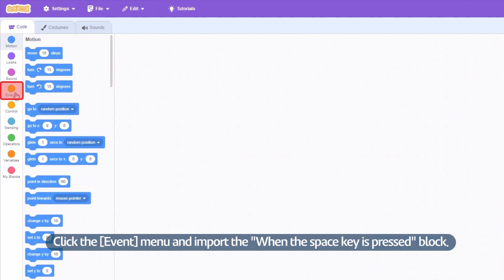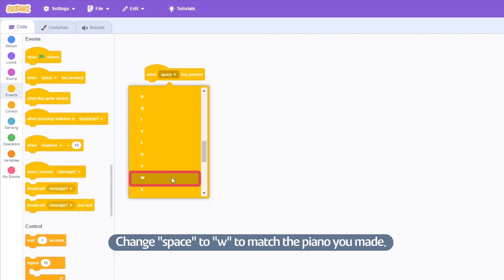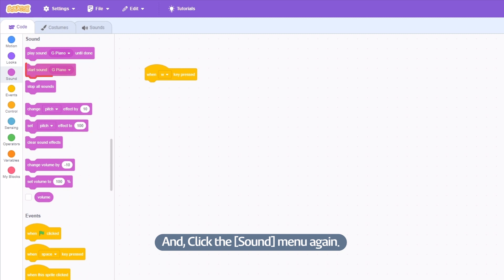Click the Event menu and import the 'when the Space key is pressed' block. Change Space to W to match the piano you made. Click the Sound menu again. Get the 'Start Sound C Piano' block. Let's code other keys in the same way.